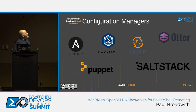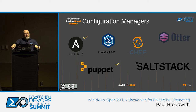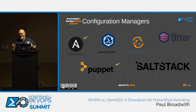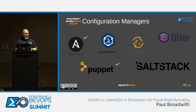Looking at configuration management support: all configuration managers on Windows use WinRM to communicate — it's all built in, works great. But which ones have OpenSSH support? Only two. There's a Puppet SSH module that works with Windows, though I'm not a Puppet person so I don't know how well it works or if it's been abandoned — your mileage may vary. Ansible has support for OpenSSH on Windows, but there are some limitations, which won't come as a surprise given the limitations of SSH on Windows anyway.